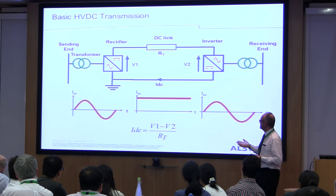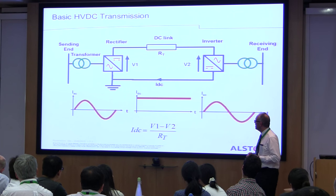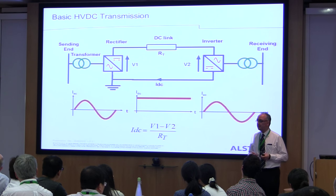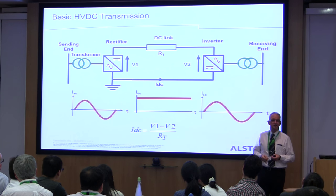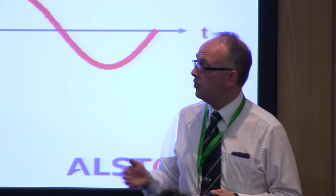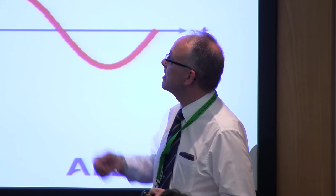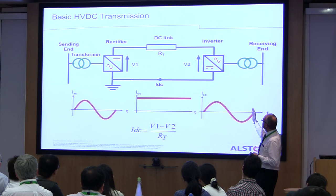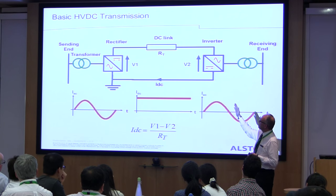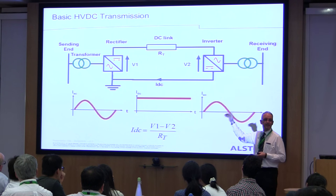The way we normally control an HVDC link is to make one converter responsible for controlling the DC voltage on the link, and the other converter controls the current. We normally pick a compounding point — typically the point of maximum DC voltage, which is the DC terminals of the rectifier. The inverter typically controls the DC voltage as it sees it at the rectifier, taking into account the resistance of the transmission line and the current.